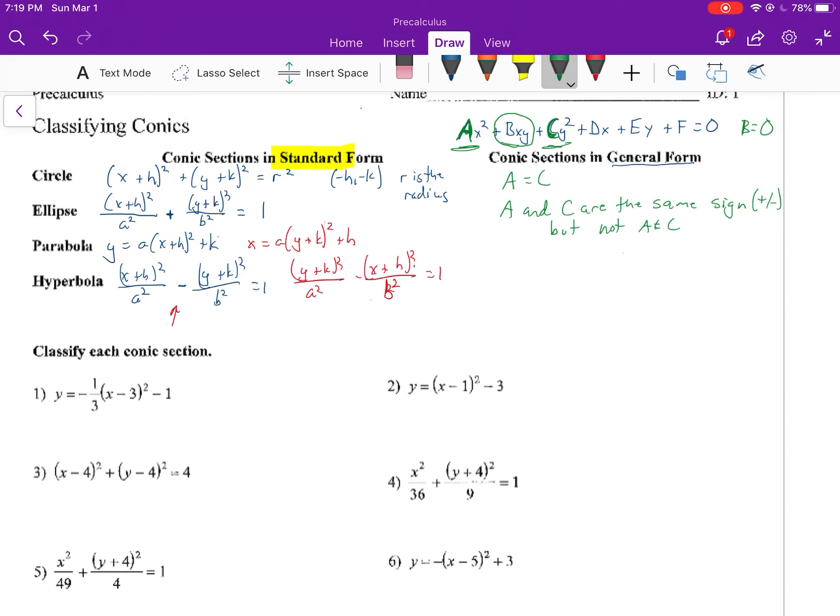For a parabola, when we looked at the parabola, notice we only had one squared term over here in our standard form. So this means either a equals 0, which means we wouldn't have an x squared term, or c equals 0, but not both. Because if both were equal to 0, then we wouldn't even have a conic section anymore.